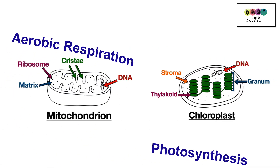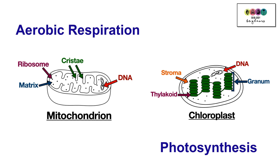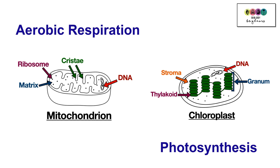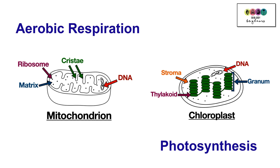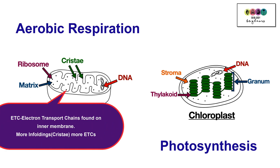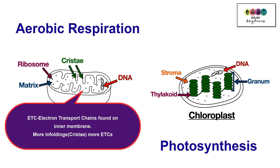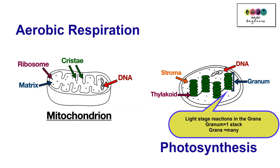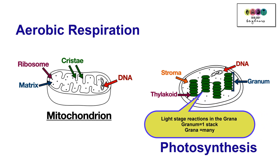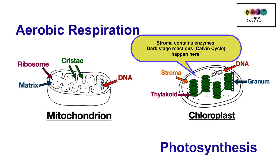Respiration and photosynthesis are huge topics, so it's really worth your while learning how to draw and label the mitochondrion and the chloroplast. Consider where the electron transport chains are located in the mitochondria — they're on the inner membrane, and the more cristae infoldings, the more electron transport chains. In the chloroplast, the light stage reactions take place in the grana, and enzymes are found in the stroma, which is also where the dark stage reactions or the Calvin cycle take place.